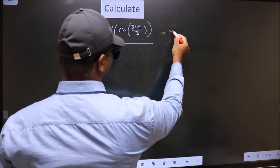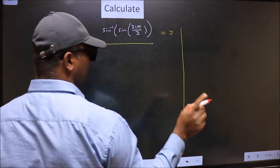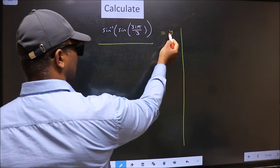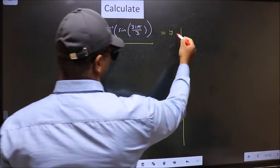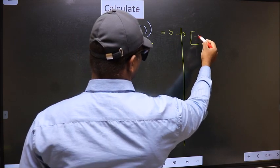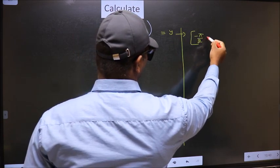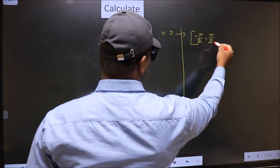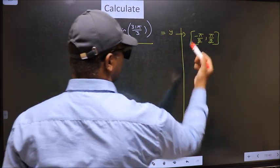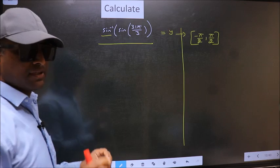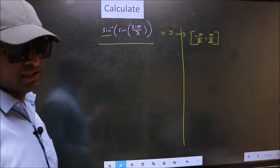Let us take the answer to be y, and the condition is y should lie in the range of sin inverse, which is minus π by 2 to plus π by 2. Our answer should lie in this interval. Clear with this point.